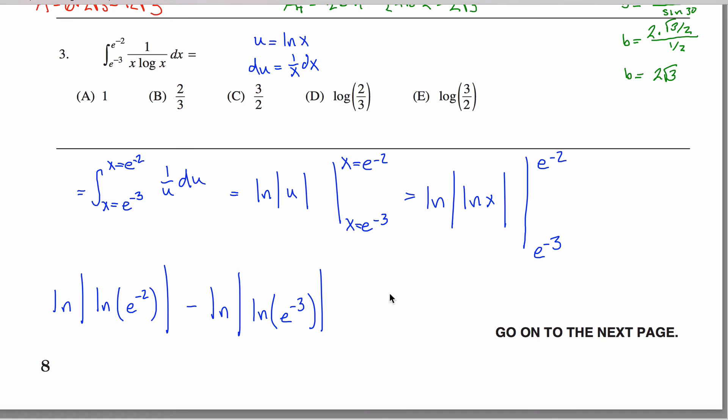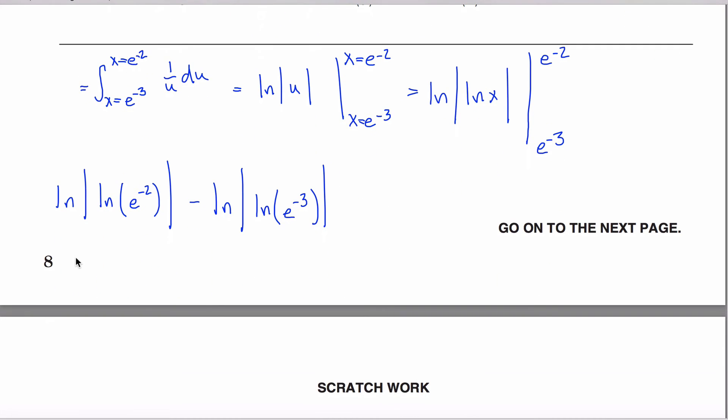And fortunately a lot of stuff cancels out here. The natural log of e to the negative second power is just negative two, so I get the natural log of the absolute value of negative two, minus natural log of the absolute value of negative three.